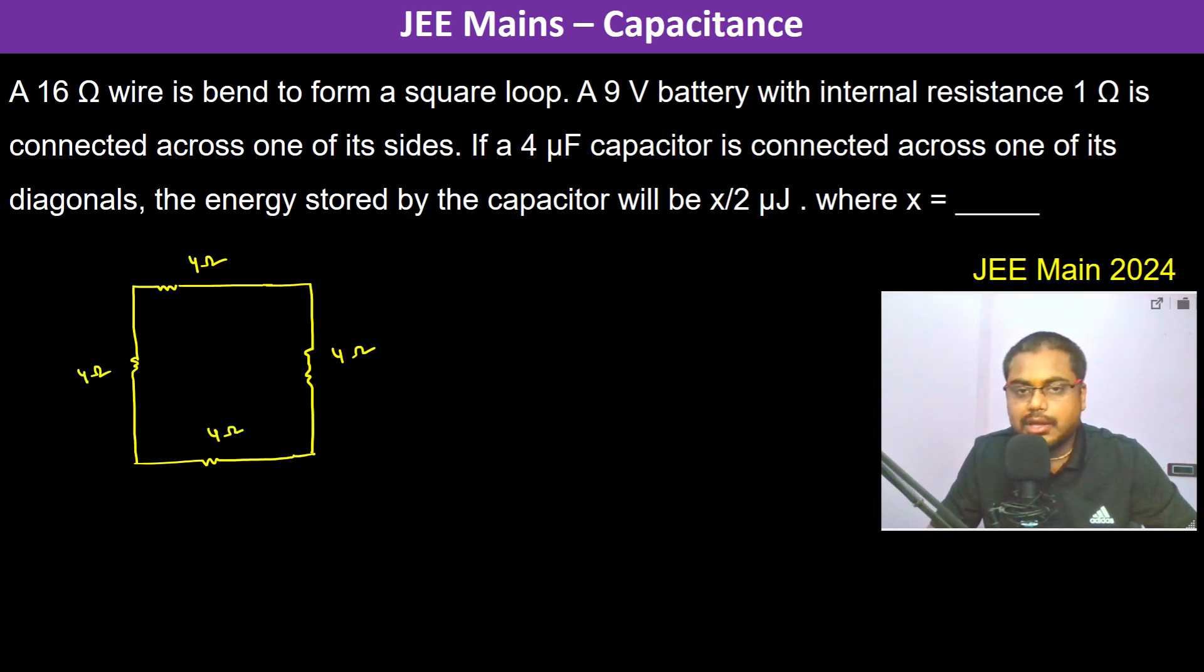A 9 volt battery with internal resistance 1 ohm is connected across one of its sides. So this is a 9 volt battery with internal resistance 1 ohm.